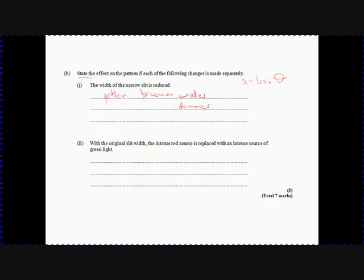With the original slit width, the intense red source is replaced by an intense source of green light. So the important thing here again, if we look at this equation, which you don't need to learn, but you just need to understand the principles of, the key thing to remember here, of course, is that red light has a longer wavelength than green light. So lambda has gone down, b stayed the same, so sine theta will go down. So the pattern will become narrower. And again, that's quite hard, but they give you the very generous mark of that the pattern will also be green. So don't miss off that easy mark, you can have any three out of those four, for three marks.